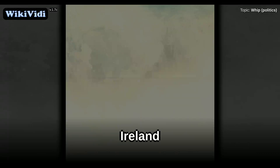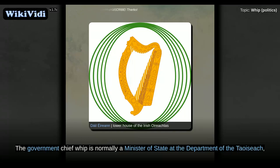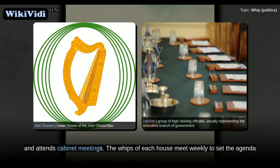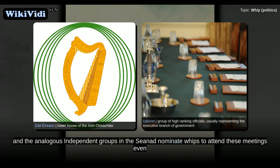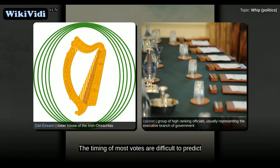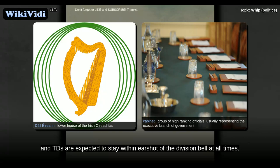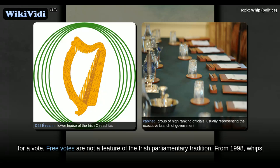Ireland. Whips exist for all parliamentary parties in Dáil Éireann and Seanad Éireann. The government chief whip is normally a minister of state at the Department of the Taoiseach and attends cabinet meetings. The whips of each house meet weekly to set the agenda for the next week's business. The technical group in the Dáil and the analogous independent groups in the Seanad nominate whips to attend these meetings even though there is no party line for the whips to enforce. Whips also coordinate pairing. The timing of most votes are difficult to predict, and TDs are expected to stay within earshot of the division bell at all times. All TDs are required to vote with their party and to receive permission if they intend to be absent.